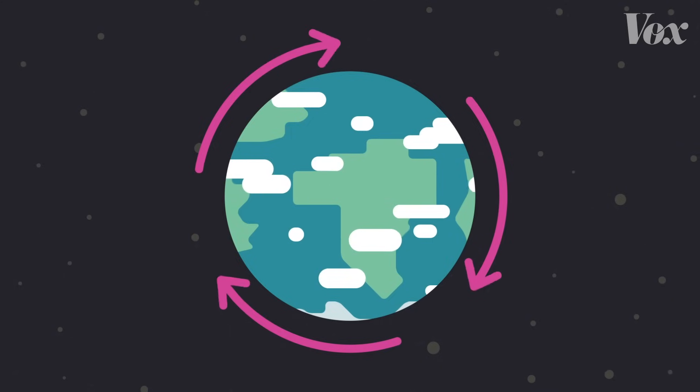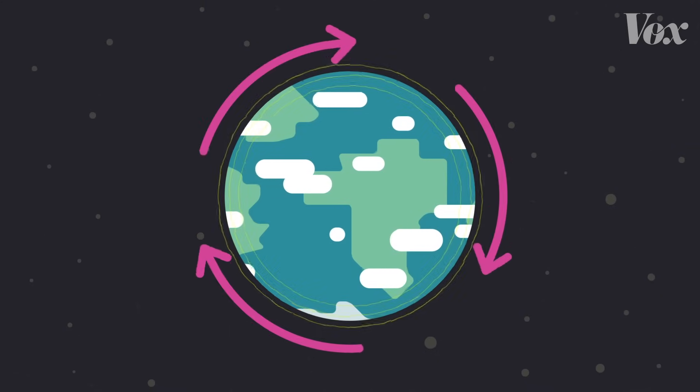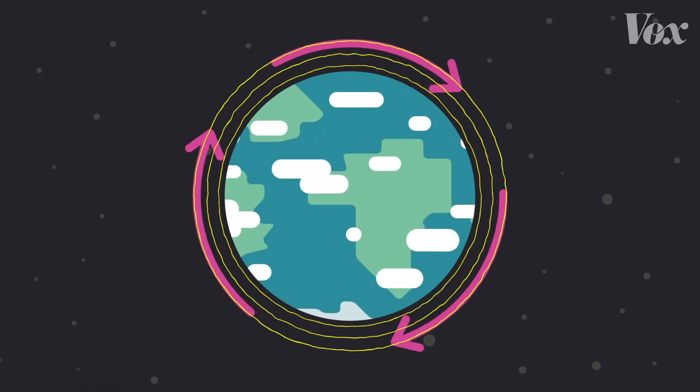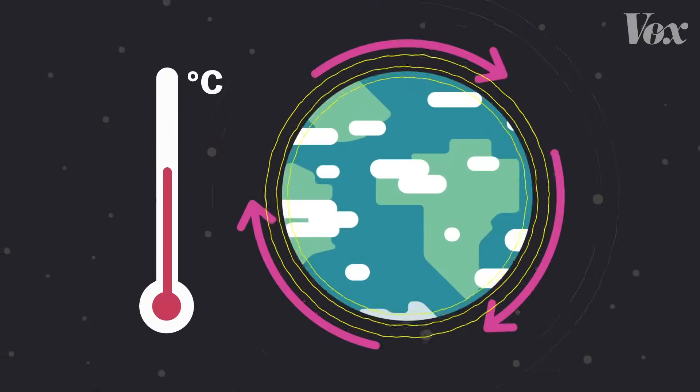This is the elegant system that keeps carbon cycling through Earth at a steady pace. Carbon in the atmosphere keeps some heat from leaving Earth. It keeps Earth at a stable temperature.